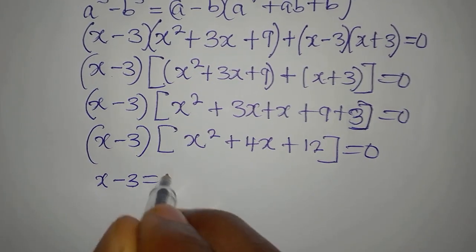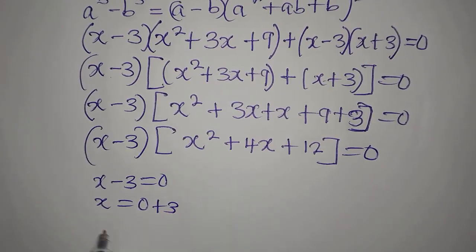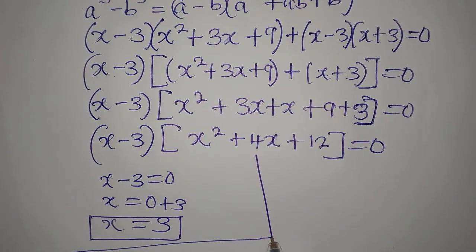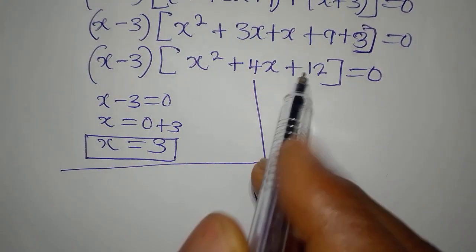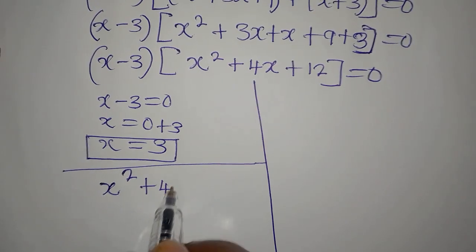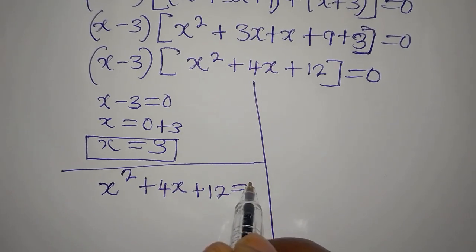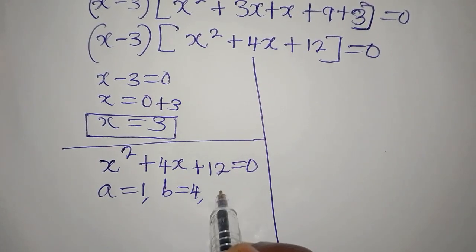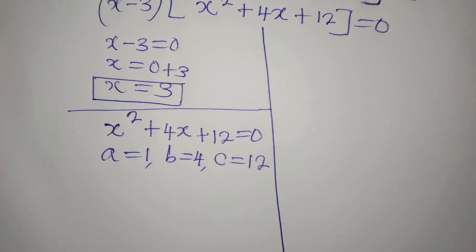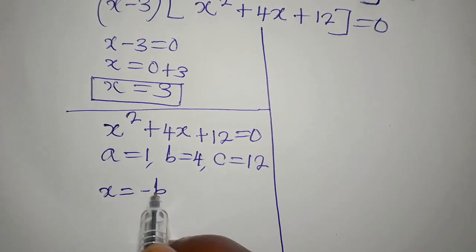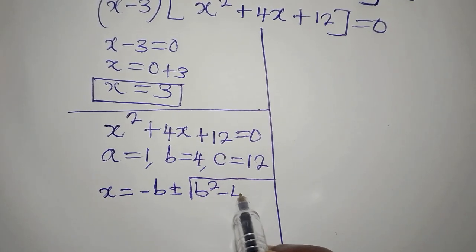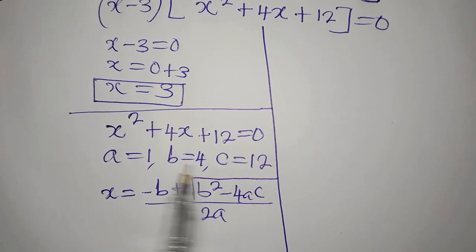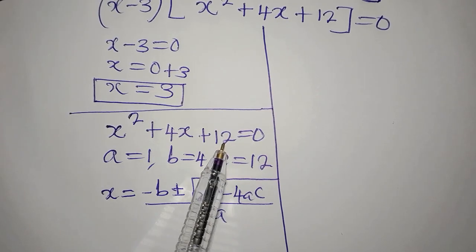From x minus 3 equals 0, we get x equals 3. Now we solve x² plus 4x plus 12 equals 0 using the quadratic formula. Here A is 1, B is 4, and C is 12. The formula is x equals minus b plus or minus the square root of b² minus 4ac, all divided by 2a.